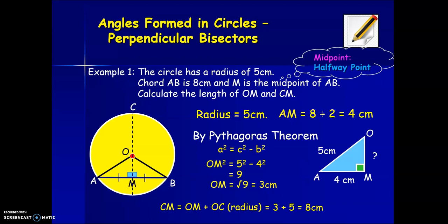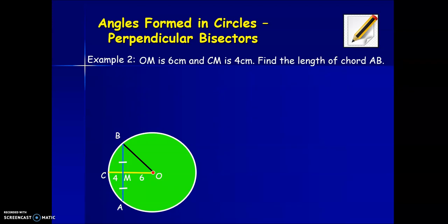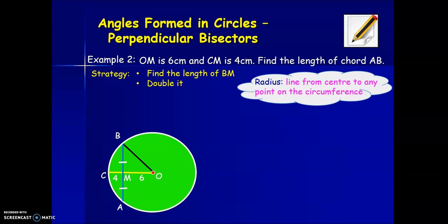Let's look at a second example. Here in example two, we are told that the distance from O to M is six centimeters and the distance from C to M is four centimeters. So our strategy here is to find the length of BM and then double it. Remember, a radius is a line from the center to any point on the circumference. So here, OB is the obvious radius, but that's also equal to OC. So the radius is equal to six plus four, which is ten centimeters.